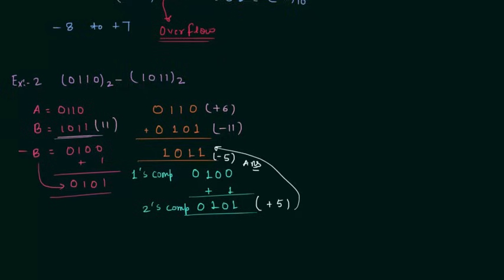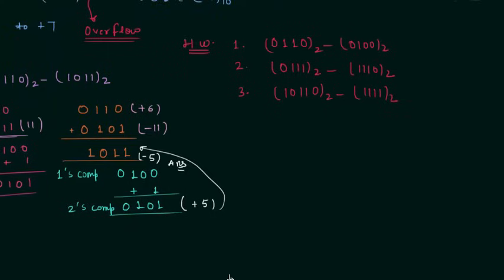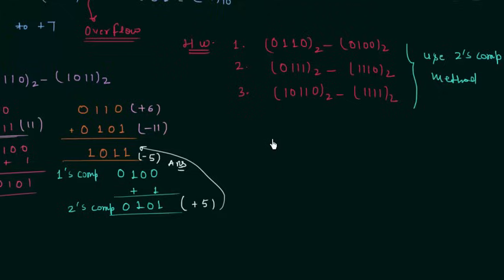This is all for this presentation. Now we will move to homework problems. In the first homework problem you have to perform the subtraction 0110 minus 0100. In the second homework problem, perform the subtraction 0111 minus 1110. And in the third homework problem, 10110 minus 1111. Remember, you have to perform the subtraction using the two's complement method. You can also use the one's complement method, but for your practice use the two's complement method for these problems. Once you have your answer, post it in the comment section. This is all for this presentation. See you in the next one.